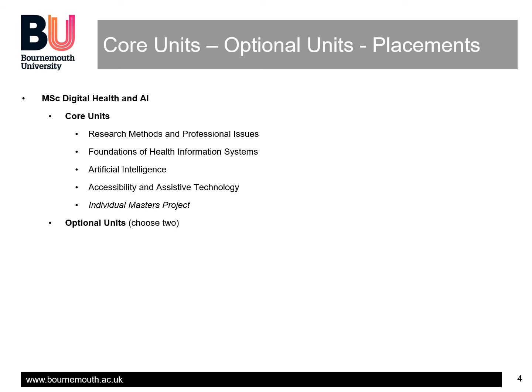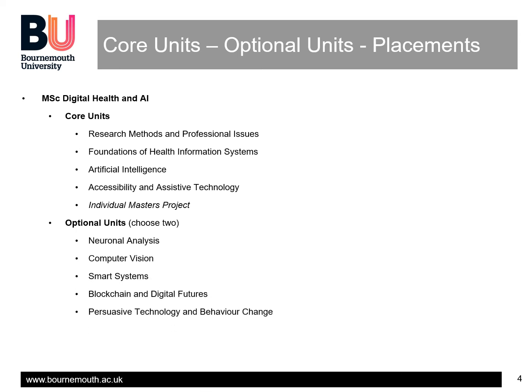In addition to this, you have optional units of which you will choose two. These are: neuronal analysis, computer vision, smart systems, blockchain and digital futures, and persuasive technology and behaviour change. You will also be given the opportunity to get a placement in industries, particularly those companies specialising in smart sensing and digital health systems.